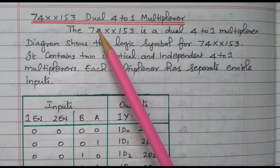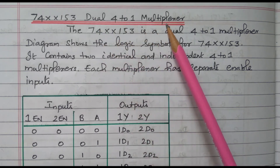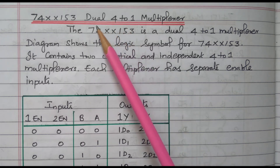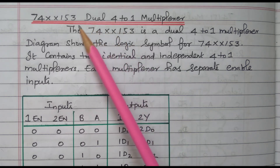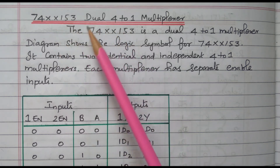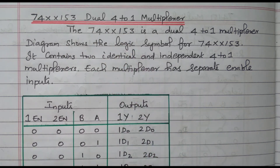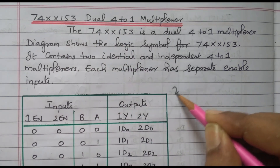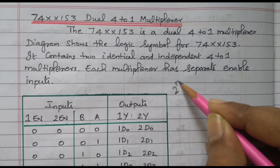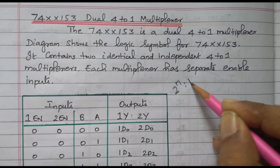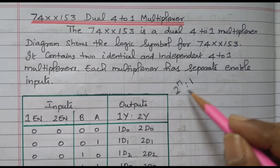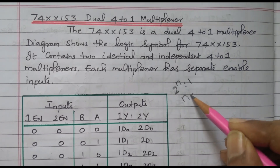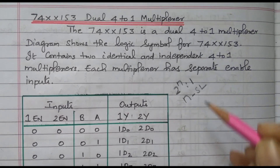Now we will go to the topic — the dual 4-to-1 multiplexer. Two sets of 4-to-1 multiplexer are available in a single IC, that is called a dual 4-to-1 multiplexer. In a multiplexer generally it has 2 to the power n inputs and 1 output, and for that we have n number of selection lines.